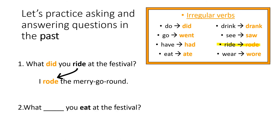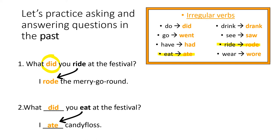Number two — there's a word missing. What did you eat at the festival? What's missing? Well, in the answer, remember, we need to change eat into the past. Eat in the past is ate. So, I ate candy floss.